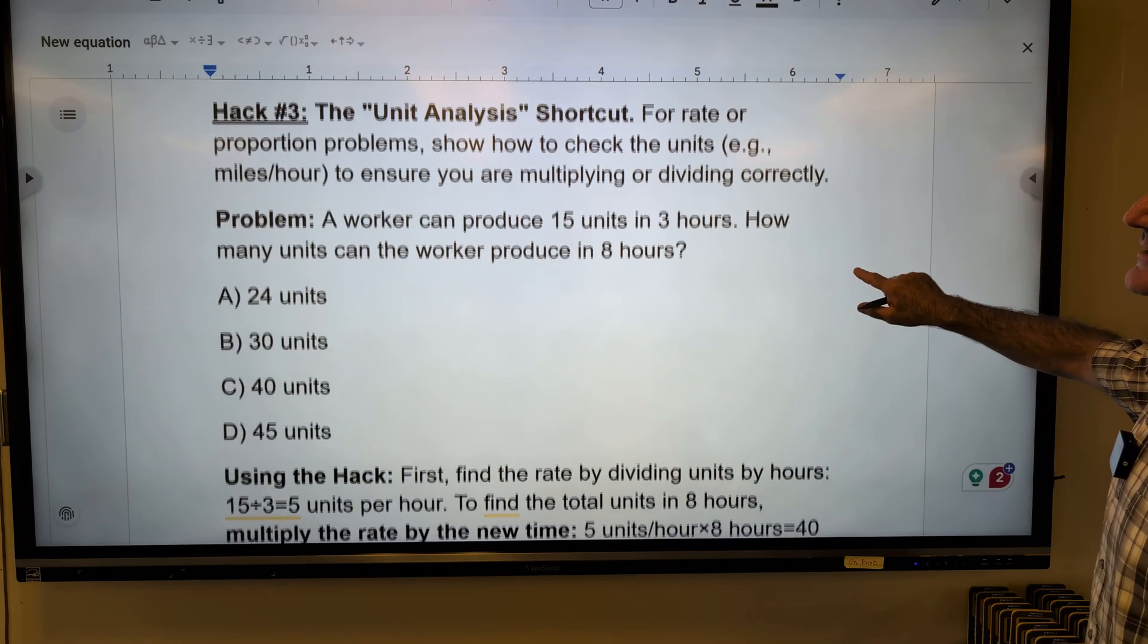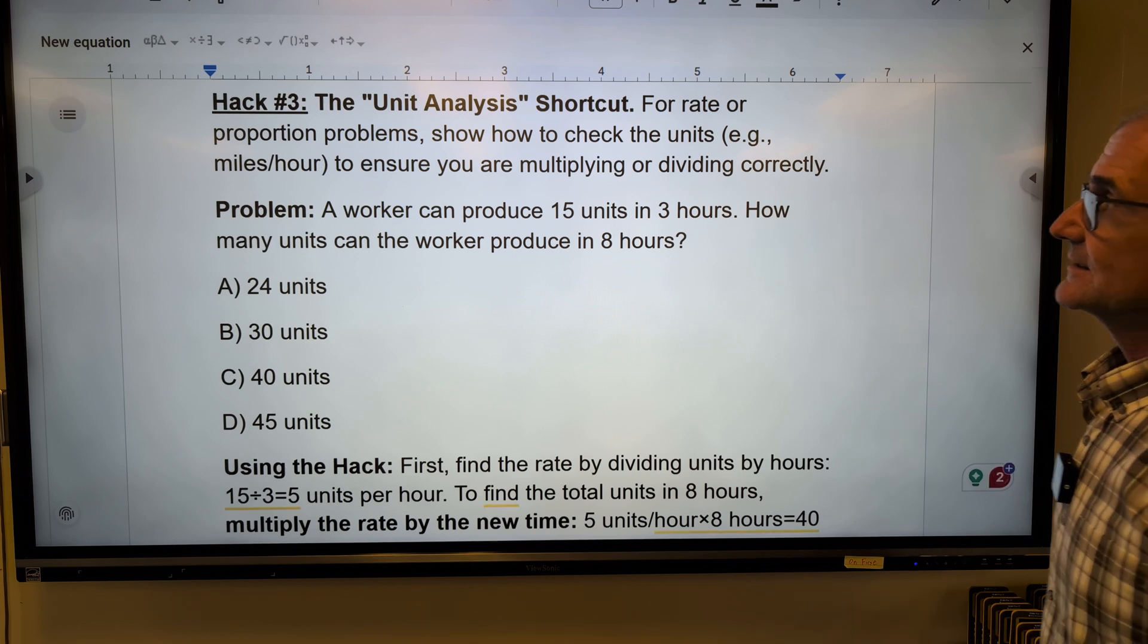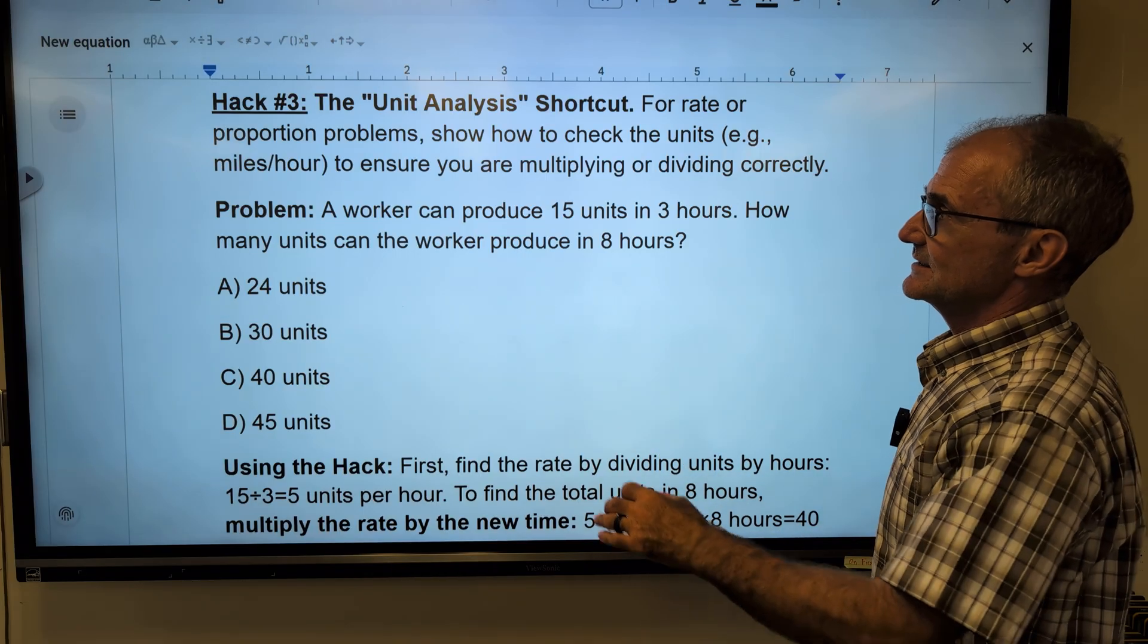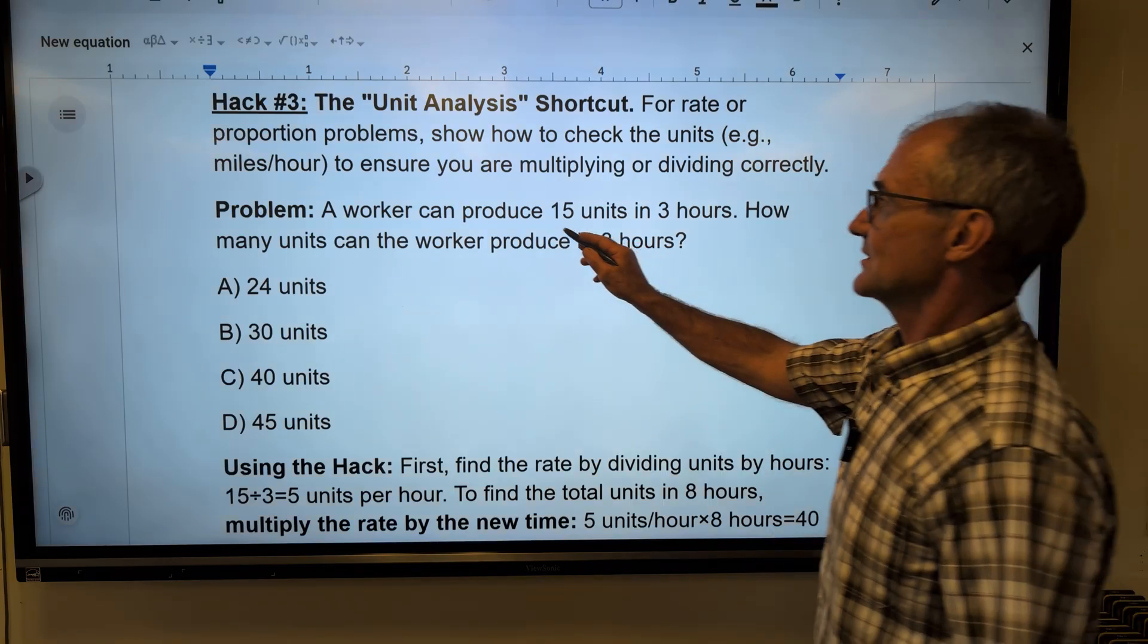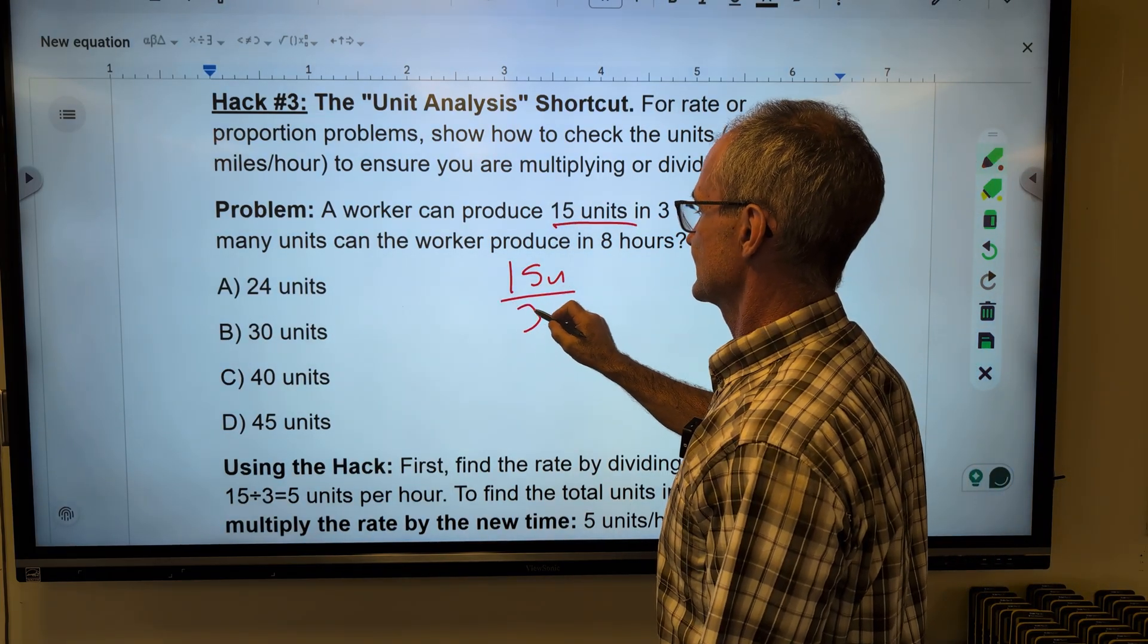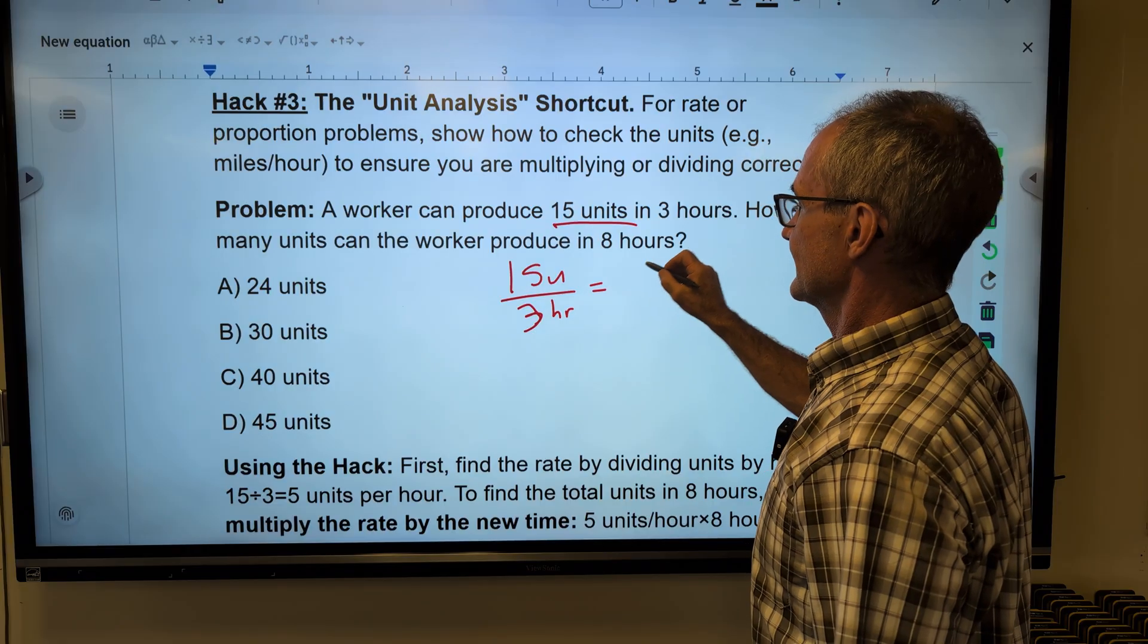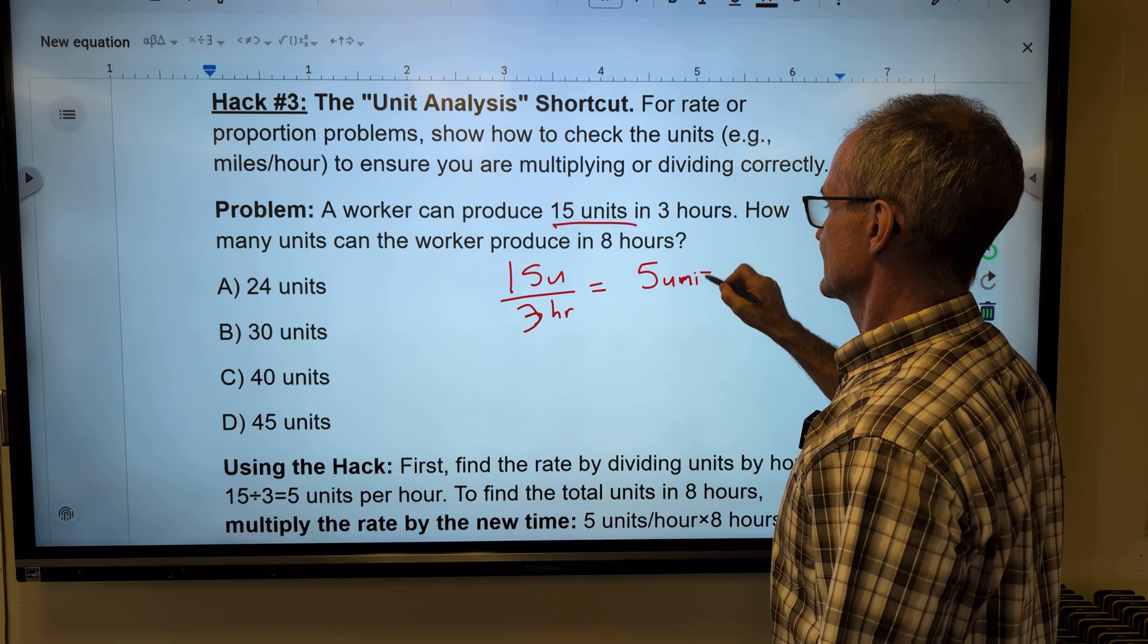So number three, unit analysis shortcut. Okay. So for a rate, proportions problem, show how to check the units. This is a really important idea. The units are going to work in your equation as well. So a worker can produce 15 units in three hours. Three hours.